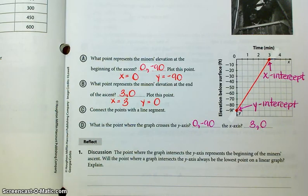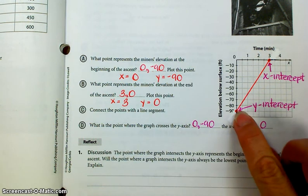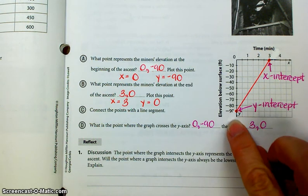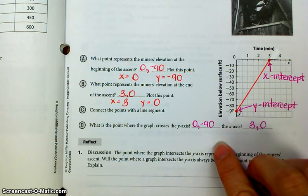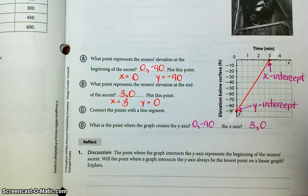All right, so on the discussion question, it says, Does the point where the graph intersects the y-axis represents the beginning of the miner's ascent? Will the point where a graph intersects the y-axis always be the lowest point on a linear graph? No, it won't always be. It depends on the situation. Here, it was the lowest point because we don't have any information for anything lower than that. But depending on the situation, a lot of times we do have graphs that are continuous with arrows at both ends. And the y-intercept is not necessarily the lowest point.